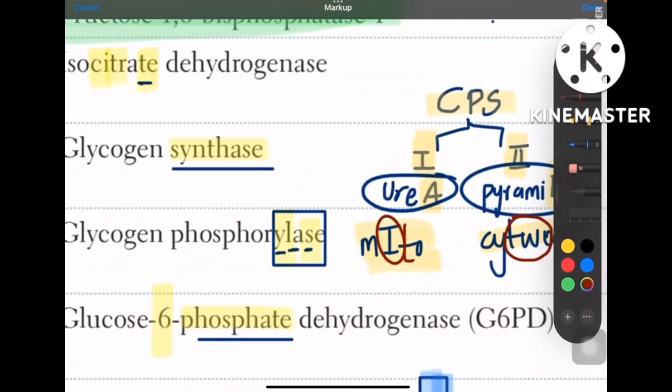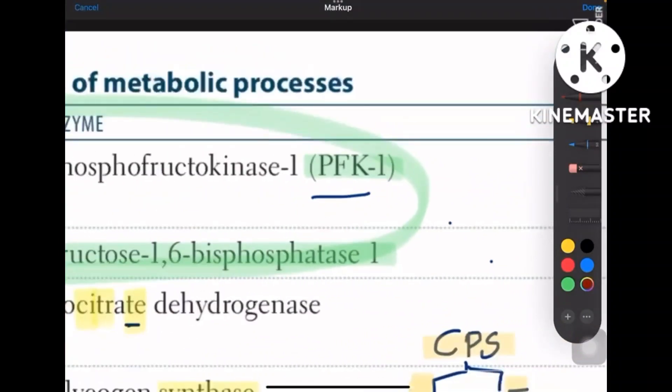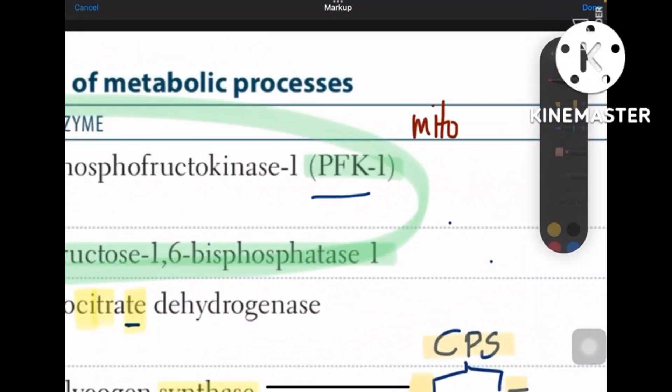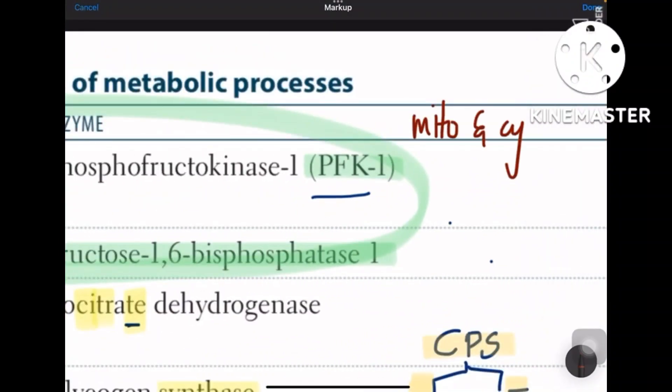And here itself remember one point that there are few cycles which occur in both mitochondria and cytoplasm. The mnemonic goes like PUBG. So P is pyrimidine synthesis, U is urea cycle, B is blood guys, that means heme synthesis, and G for gluconeogenesis.